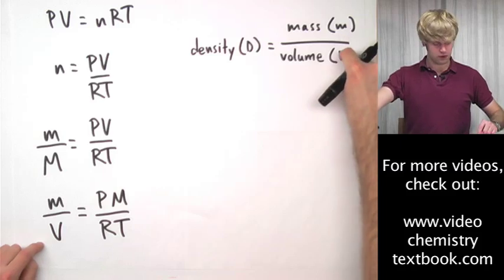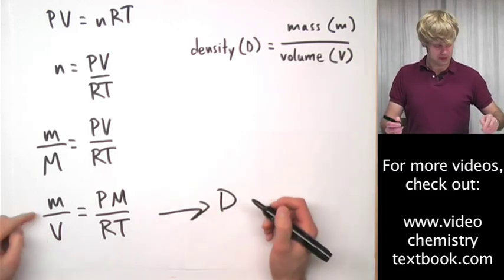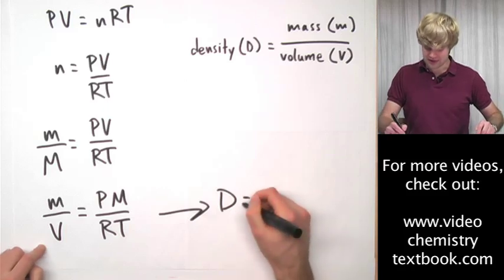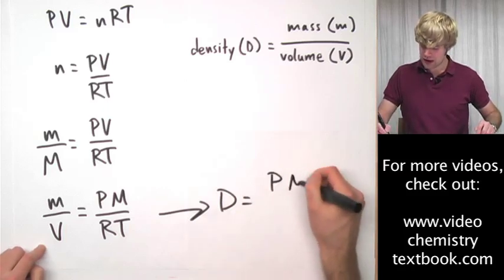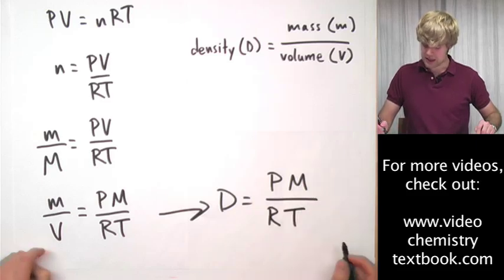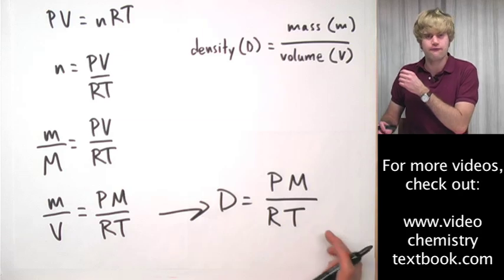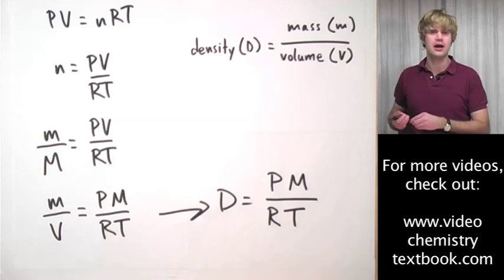Now mass over volume I can rewrite as density because they're the same thing. So now I have density equals pressure times molar mass divided by the universal gas constant times T. And that is our transformed version of the ideal gas law equation.